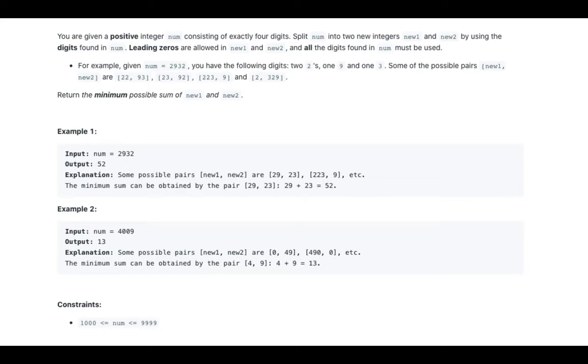Explanation: Some possible pairs new1, new2 are 0 and 49, 49 and 0, 4 and 09, 90 and 4. The minimum sum can be obtained by the pair 4, 9. 4 plus 9 equals 13.